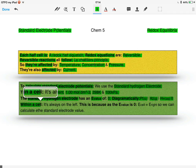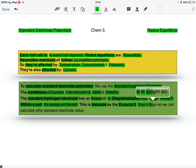Within a cell, the standard hydrogen electrode is always on the left. This is because the E value is zero, so that makes the E cell equal the electrode potential of the right.